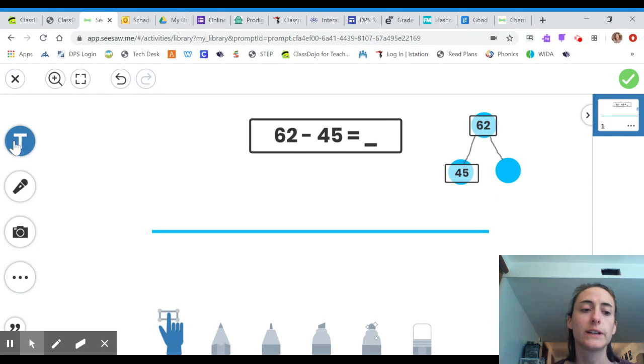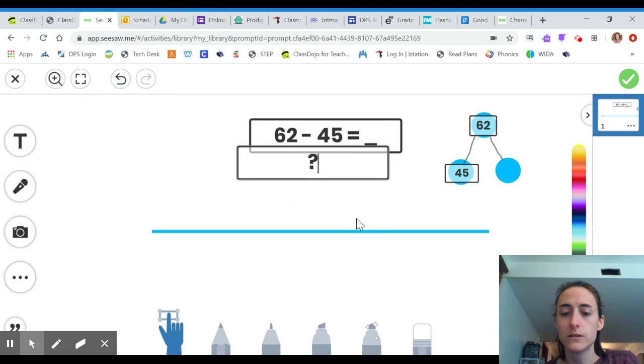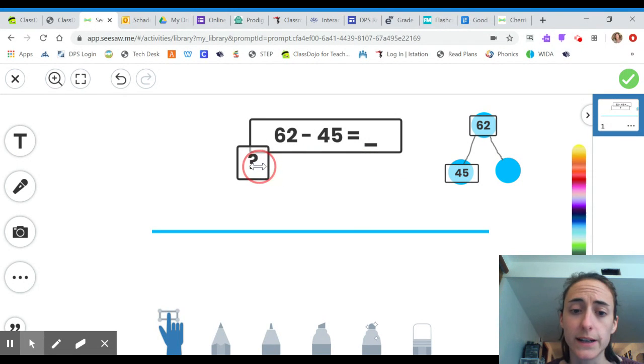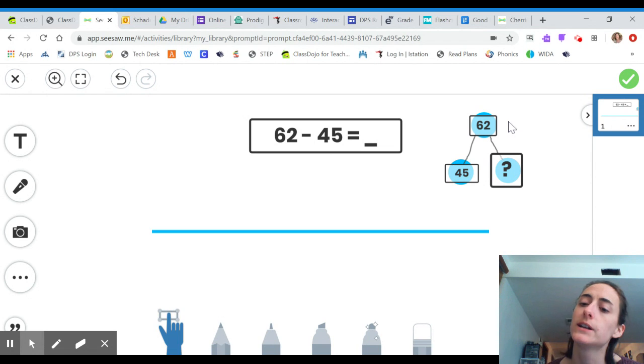And now over here in the other circle, I don't know what the other part is. That's the mystery that our number line is going to help us figure out. So basically if we have 45 and we already know that part, we need to find how much more does it take to get to 62.